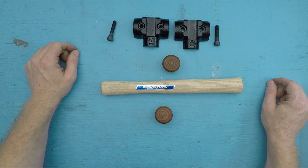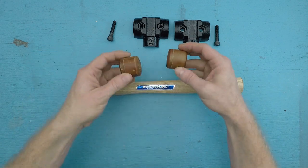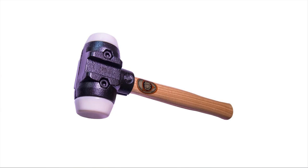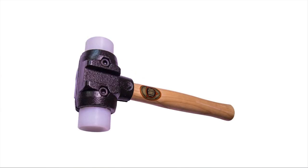Now, mine came with these two rolled rawhide faces, but if you don't want rawhide for whatever reason, you can also buy it with faces made of nylon or ultra high molecular weight polyethylene.